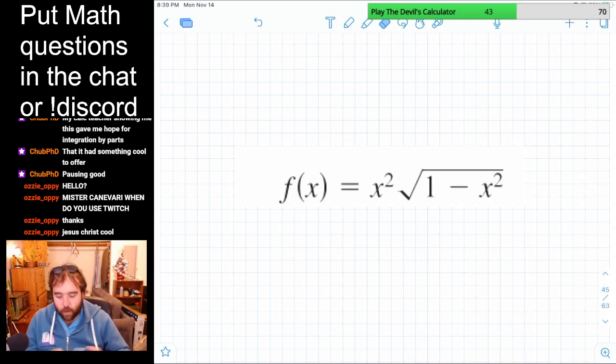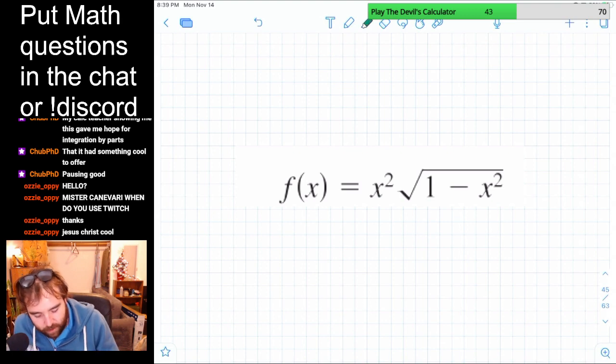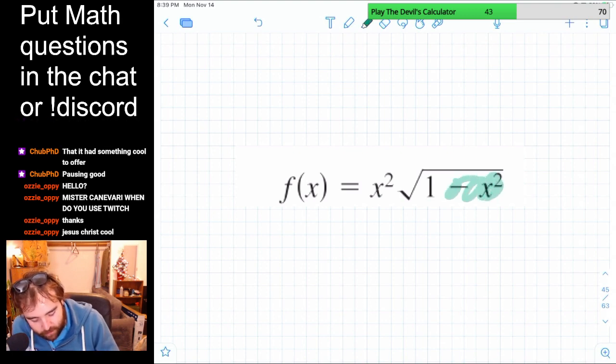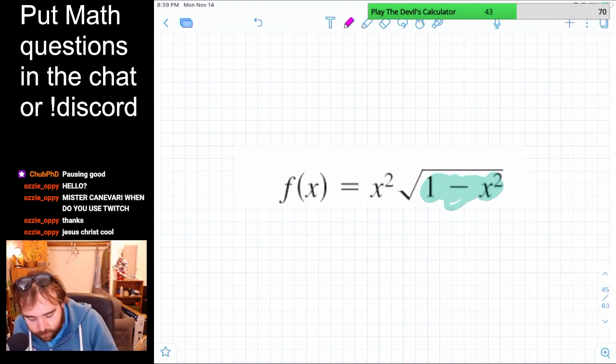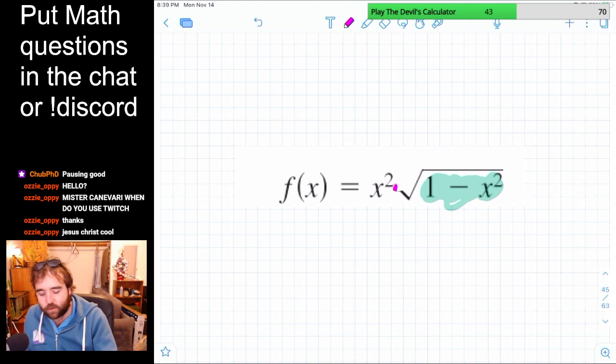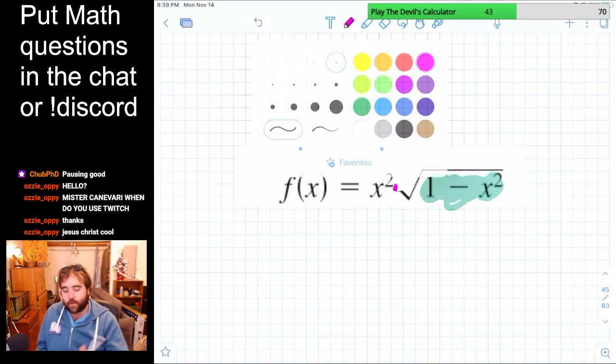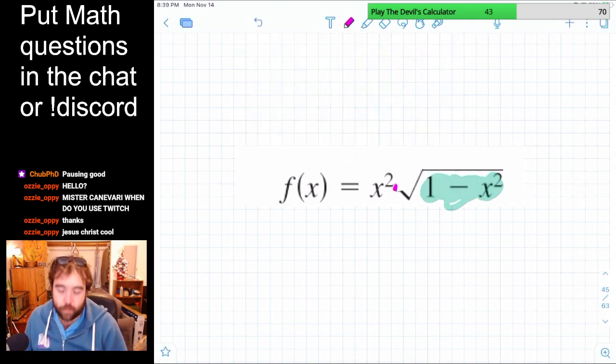So how do you take this derivative? We've got to use the chain rule. Why? Because we have a function inside of the square root, a function inside of another function. We also have to use product rule, because we have two functions multiplied together. So we've got to do both of those things.